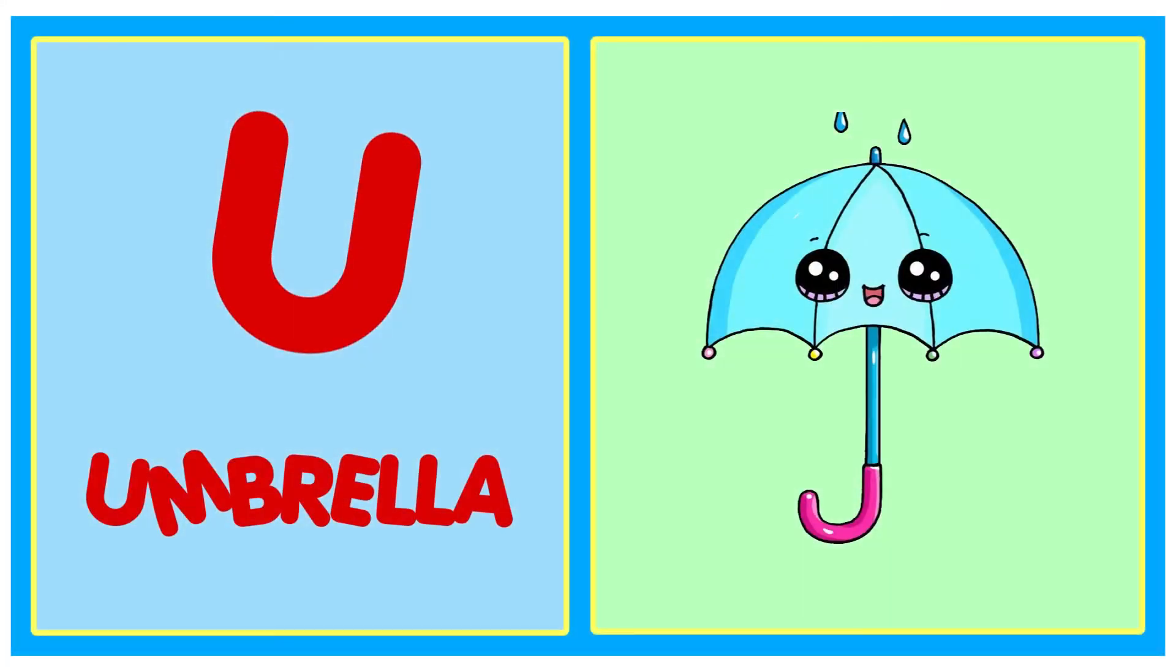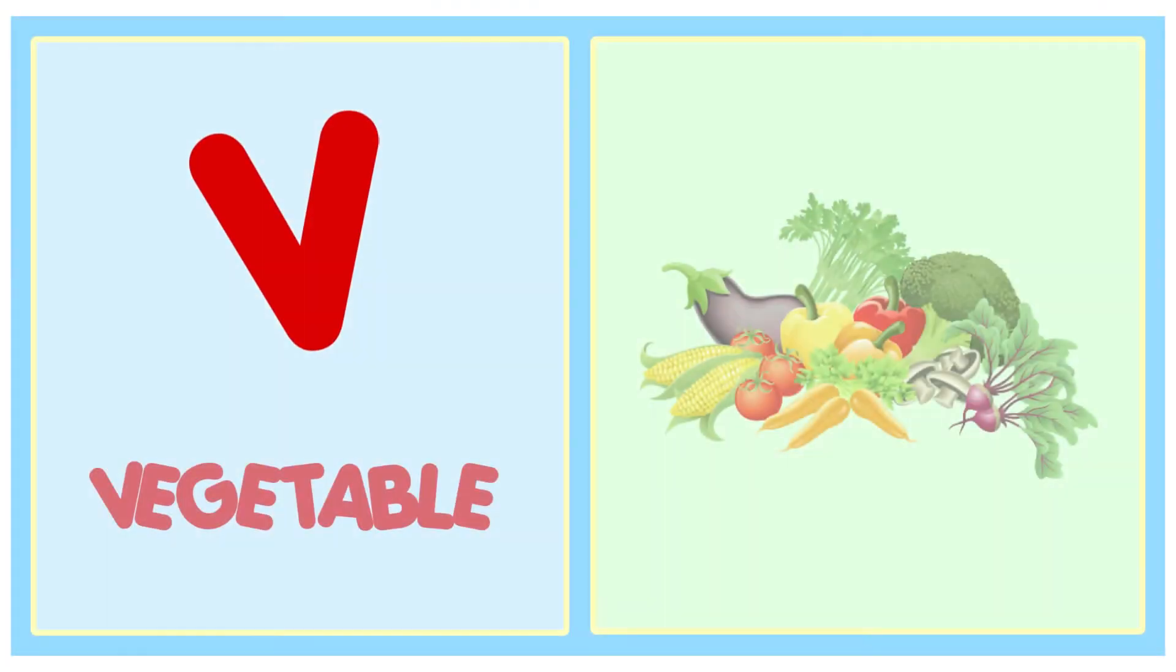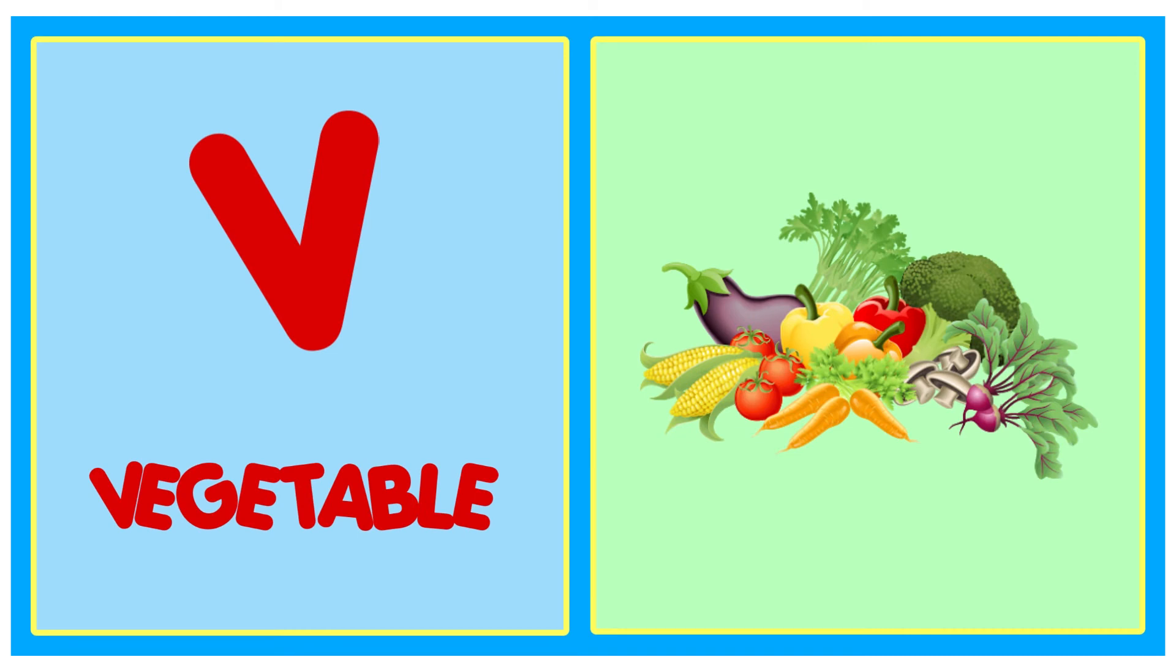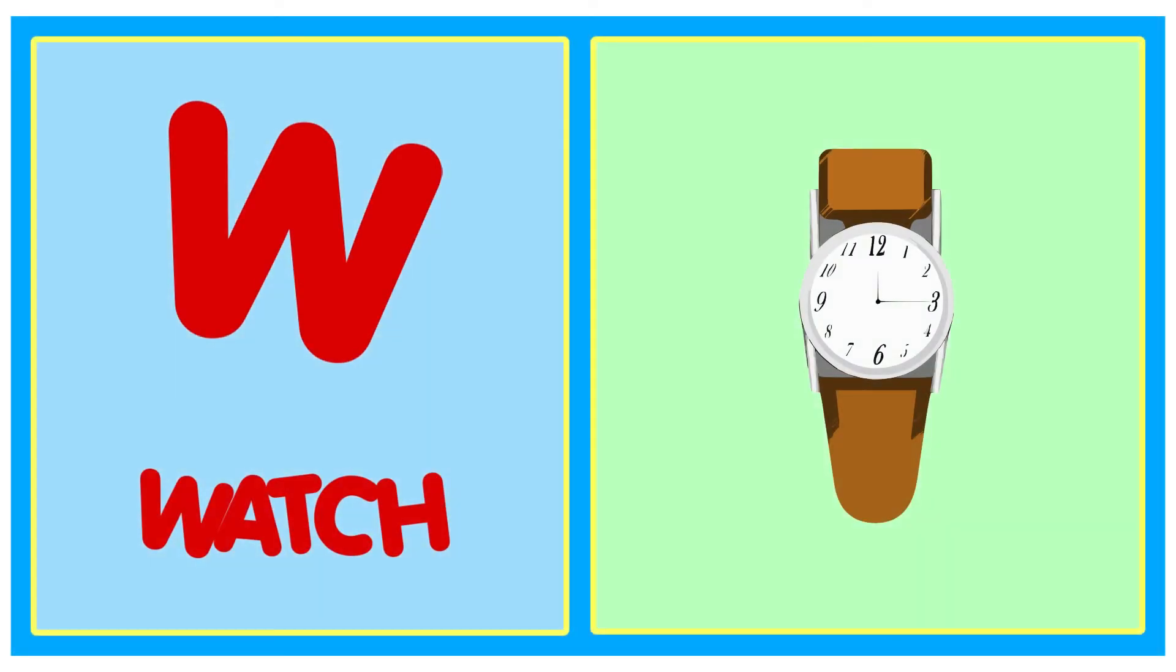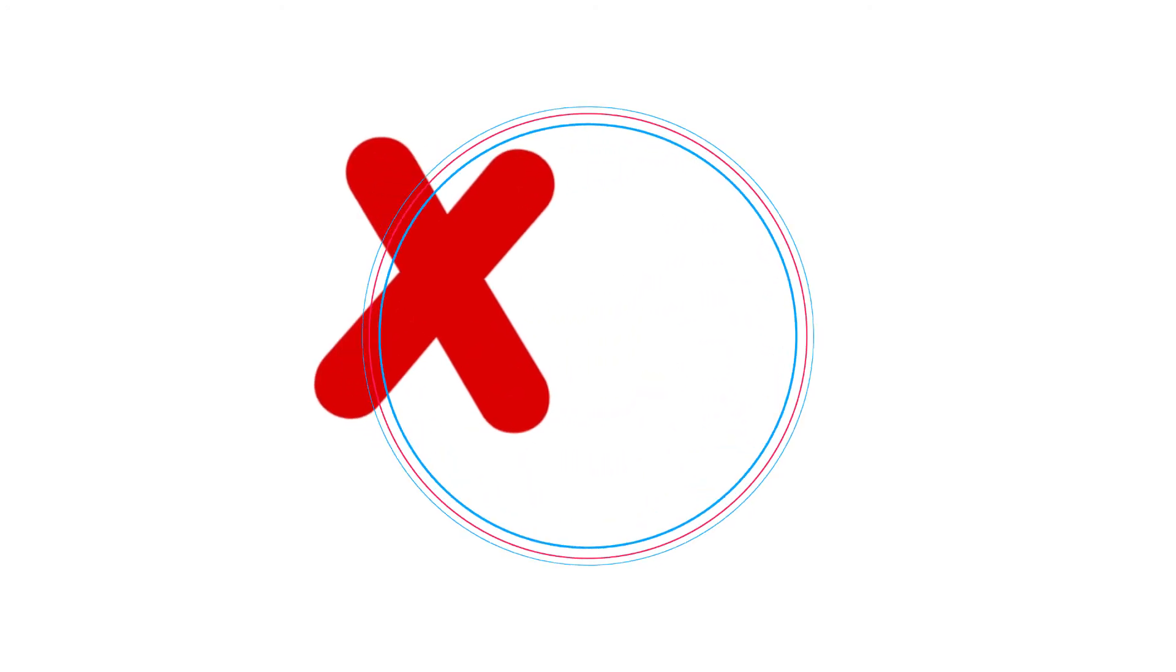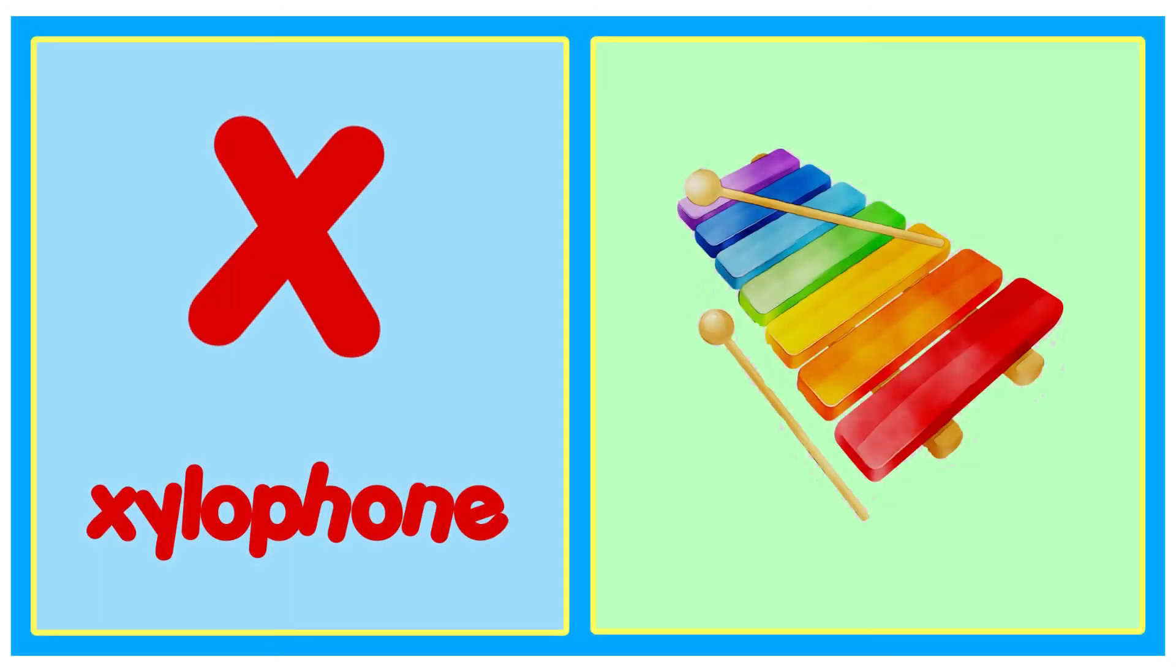U for Umbrella. V for Vegetable. W for Watch. X for Xylophone.